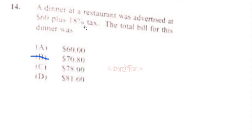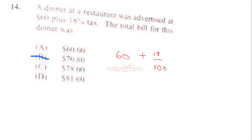Question 14: A dinner at a restaurant was advertised at 60 dollars plus 18 percent tax. The total bill for this dinner will be the 60 dollars plus 18 percent of the price of the dinner, which is 18 over 100 times 60.